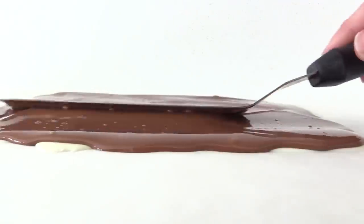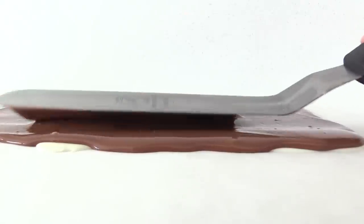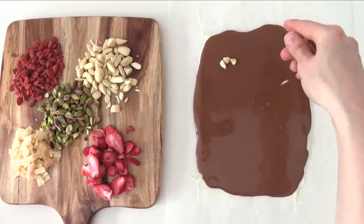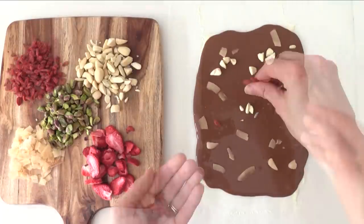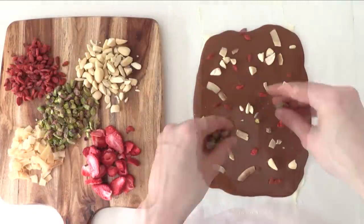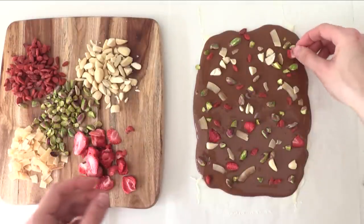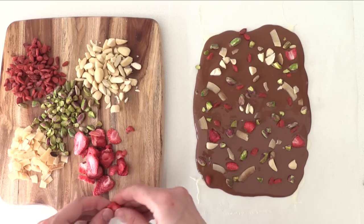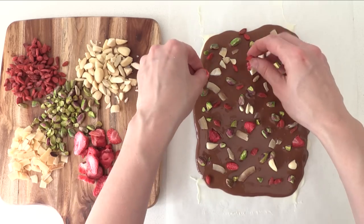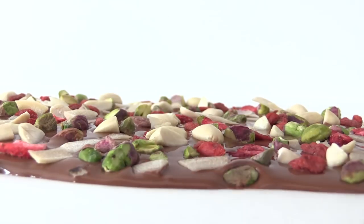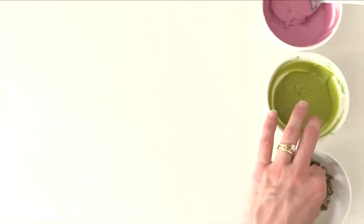Now before that sets move on to sprinkling your choice of decorations over the top. I'm using blanched almonds, roast coconut strips, dried goji berries, pistachio nuts and freeze dried strawberries. You can use whatever you like. Fruit and nut combinations are pretty popular but kids tend to like things like candies on top and tiny teddies and lots of more sweet stuff added to the top there.